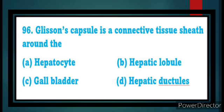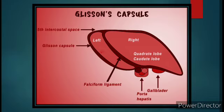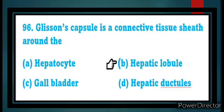Question number 96: Glisson's capsule is a connective tissue sheath around the dash. We already saw this in the previous question. Glisson's capsule covers the hepatic lobule. Hepatic lobule is the structural and functional unit of the liver, and this lobule is covered by a connective tissue called Glisson's capsule. The answer is hepatic lobule.